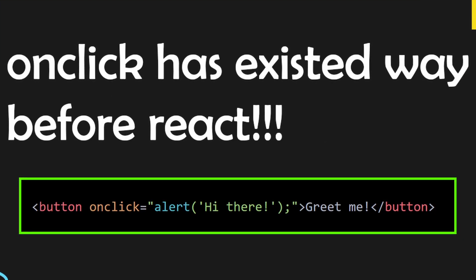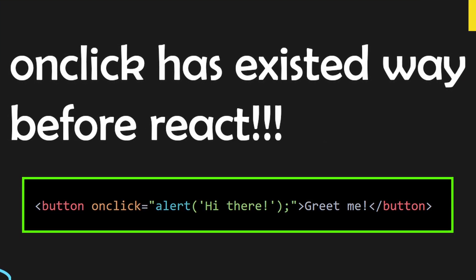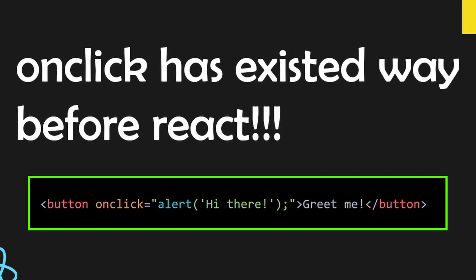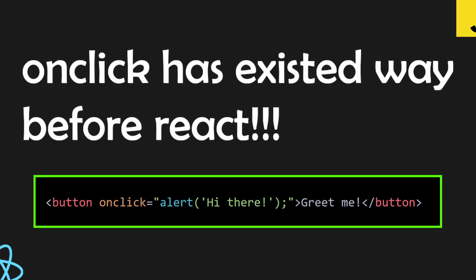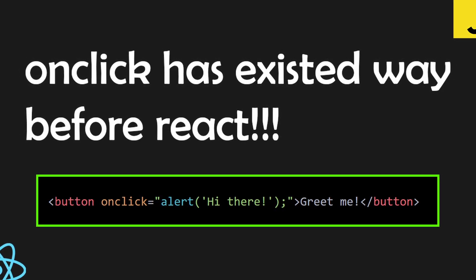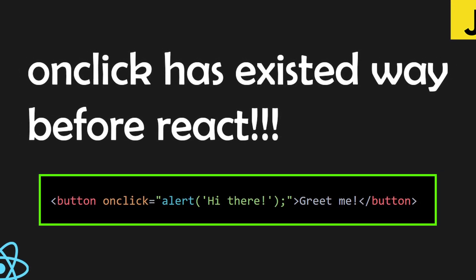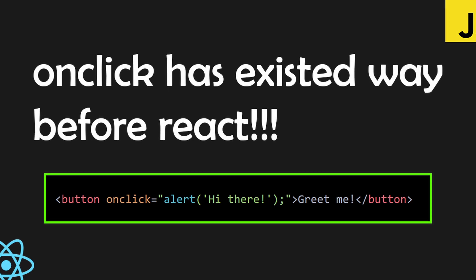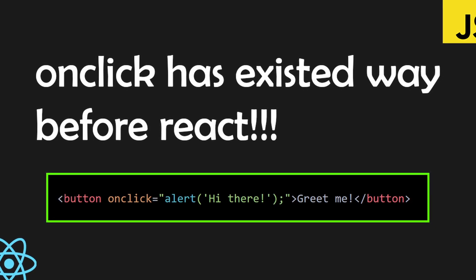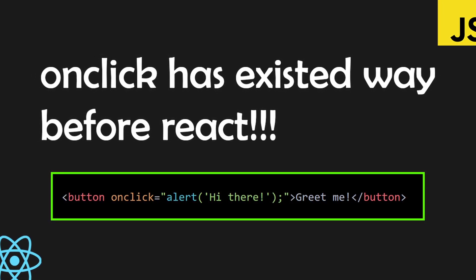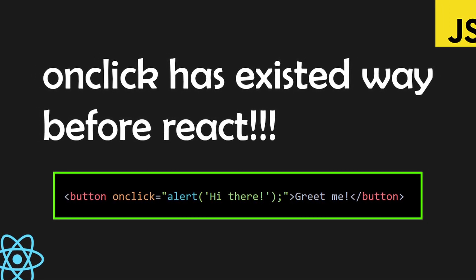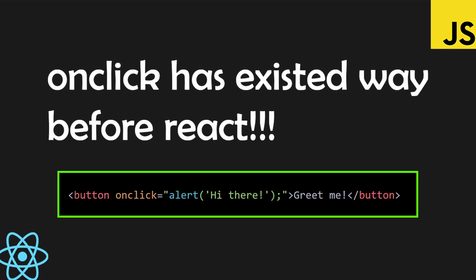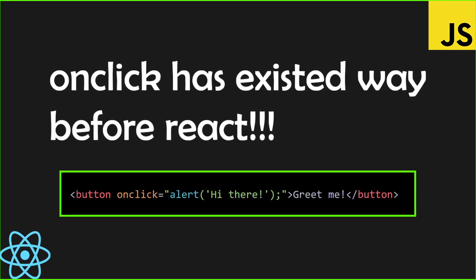Now the onClick in React is not specifically a React feature. onClick is an inline event and it has been there since way before React. That code actually works and events used to be written like that. React has adopted this same style of attaching events inline but has added their own touch to it.